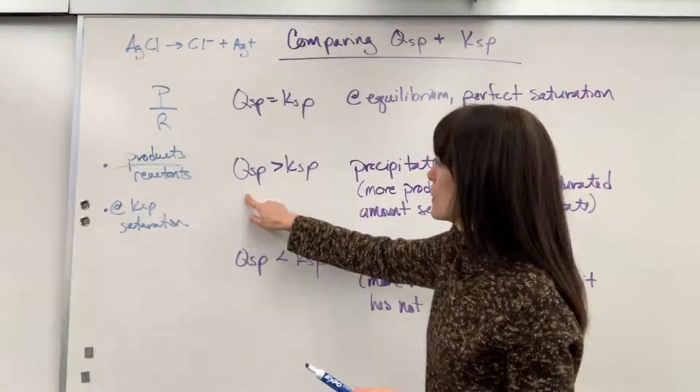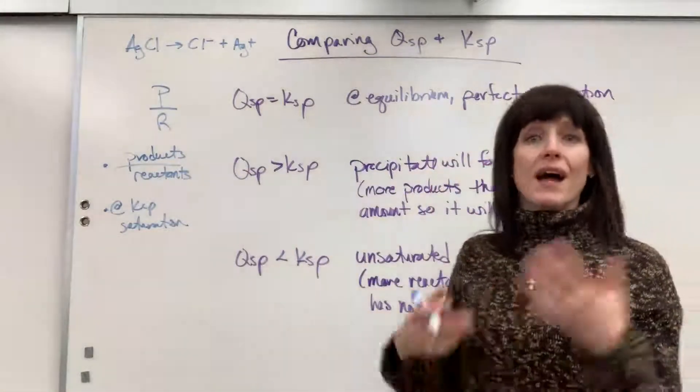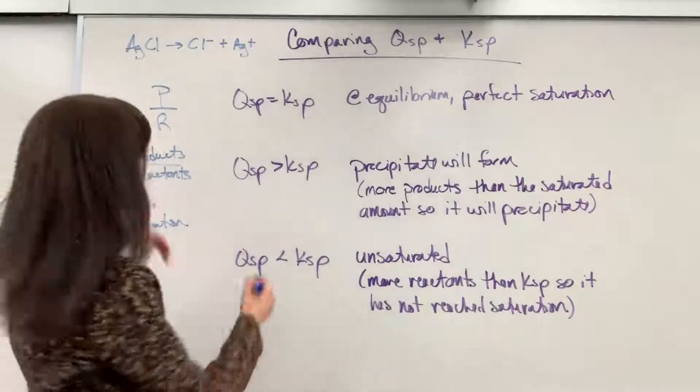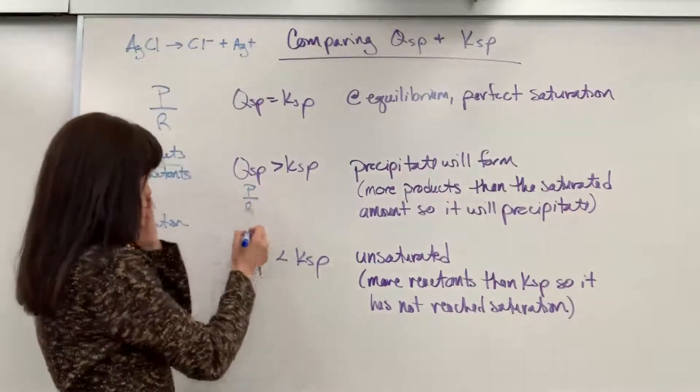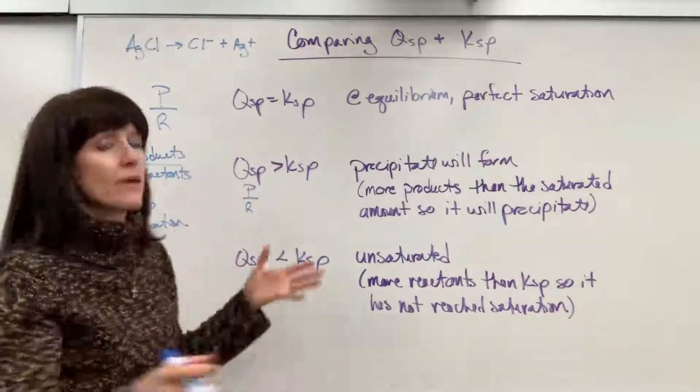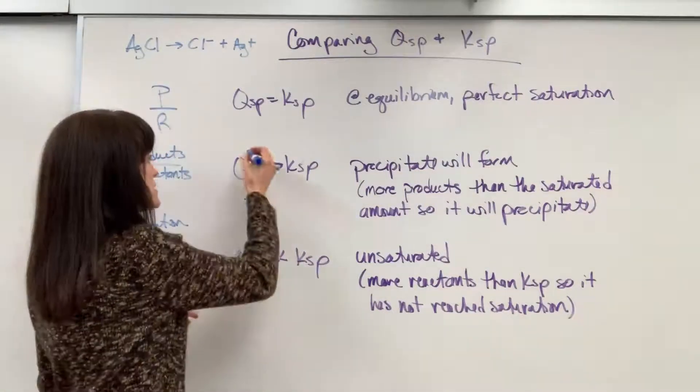Now, if QSP is greater than KSP, and this is how I walk it in my brain. I remember this fact right here. So products over reactants. If QSP is bigger, let's just throw out some numbers so you can work this out.